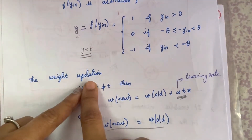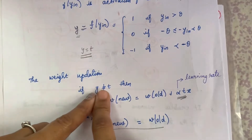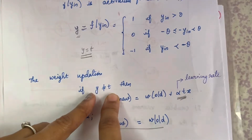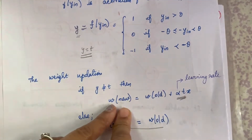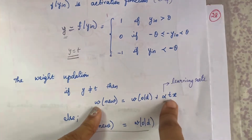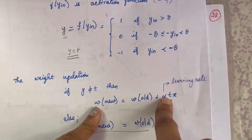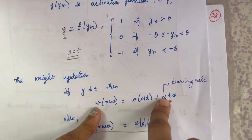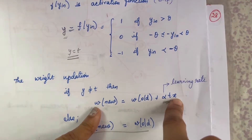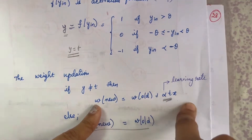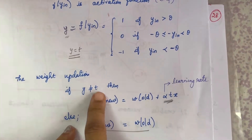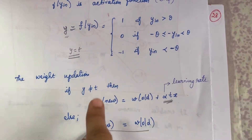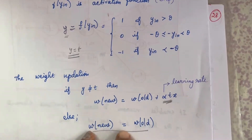For weight updation — how do you update the weights? It is based on the target value. You compare the output value received from the network with the target value. If they are not equal, you update the weights using: w_new = w_old + α·t·x, where α is the learning rate (a value between 0 and 1), t is the target value, and x is the input value. If they are equal, the old weights become the new weights — meaning there is no change, and you can take that as the final output.